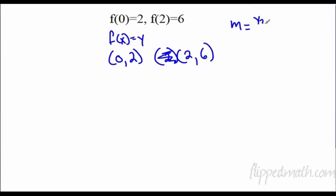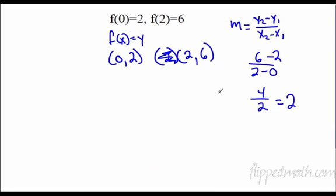y2 minus y1 over x2 minus x1. So y2 is 6 minus 2, divided by x2 is 2, minus 0. 6 minus 2 is 4, 2 minus 0 is 2, 4 divided by 2 is 2. Then I've got to plug it back in.